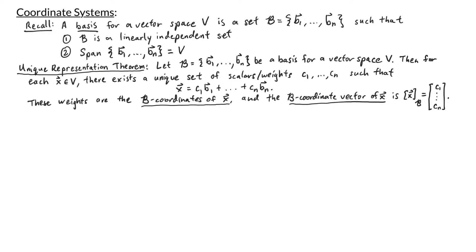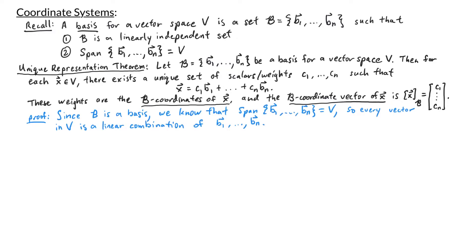Let's prove this theorem. There are two things we need to show. First, that any vector x in our vector space V can be written as a linear combination of b1 through bn. Second, that the way we write x as a linear combination of b1 through bn is unique. We know x can be written as a linear combination of b1 through bn because b1 through bn is a basis, which means it spans V, so every vector in V is a linear combination of b1 through bn.